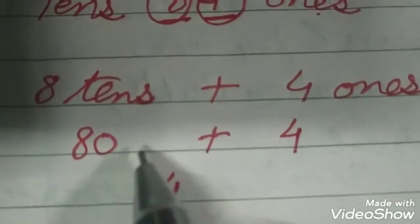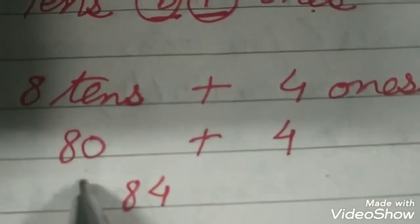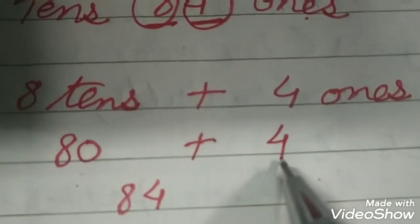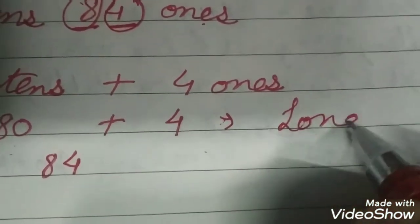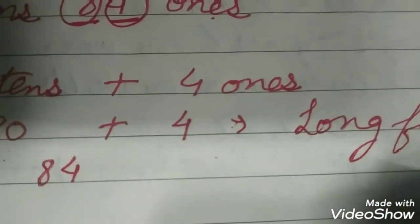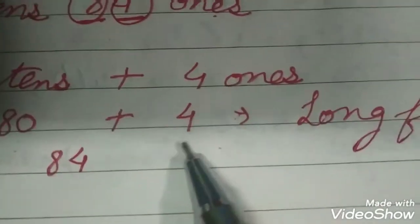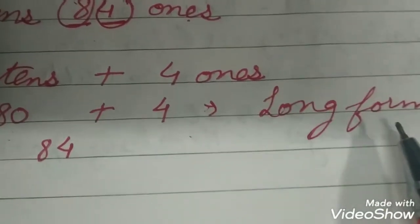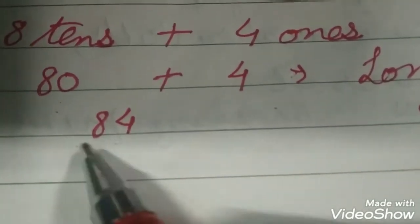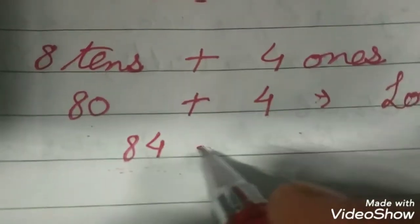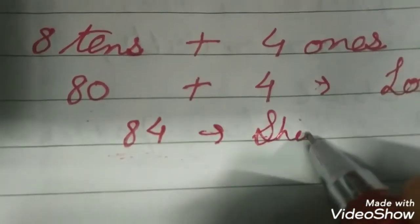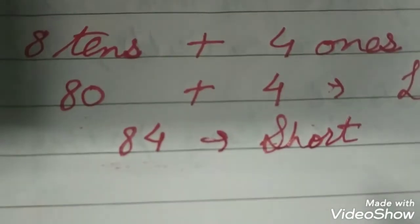So this form, beta, every number has two forms. When we separate the tens and the ones, this form is known as expanded form or the long form. Isko kya bolte hain hum? Long form ya phir expanded form. Kisi bhi number ko agar hum tens aur ones ko aise alag karke likhte hain, that is known as long form or expanded form. And this one, jab hum number ko aise likhte hain, tens aur ones ko combine karke, this is known as the short form. Isko hum bolte hain short form.